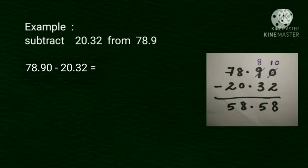At that time, 9 becomes 8. 8 minus 3, 5. 8 minus 3, 5. We put decimal point.